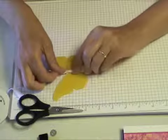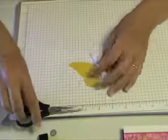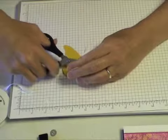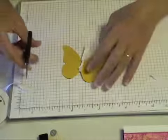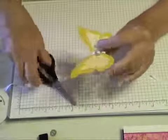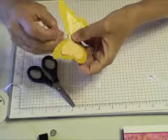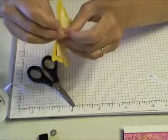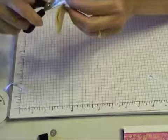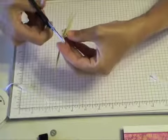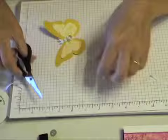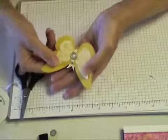There we go. Now on my butterfly I cut the tail off completely and on the top part to kind of make it look like the antennas, I just did a little V cut. So it looks like that.